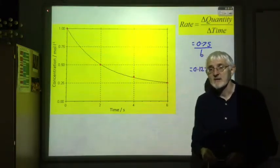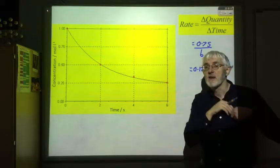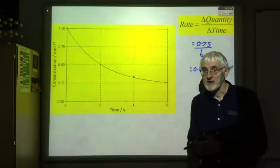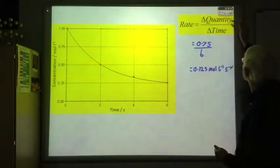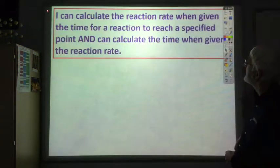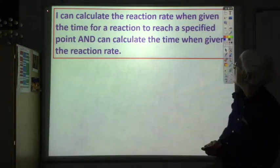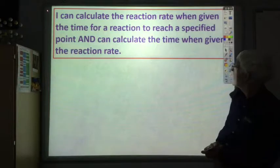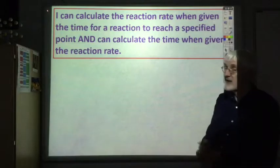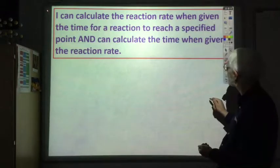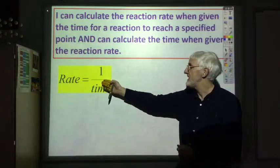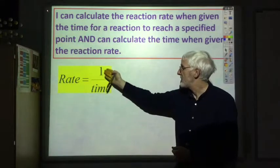At Higher it's more likely that we carry out an experiment by timing how long a reaction takes to reach a specified point. You should be able to calculate the reaction rate when given the time for a reaction to reach a specified point, and calculate the time when given the reaction rate. In this case you'd use the equation in your data booklet: rate equals one over time.